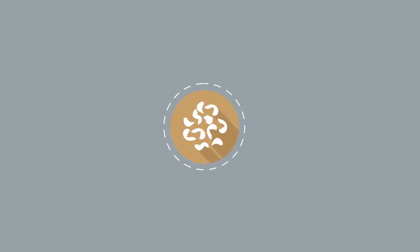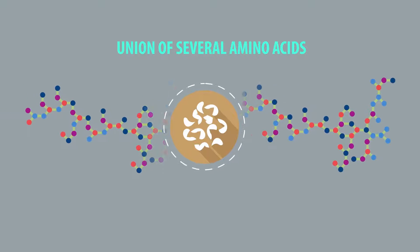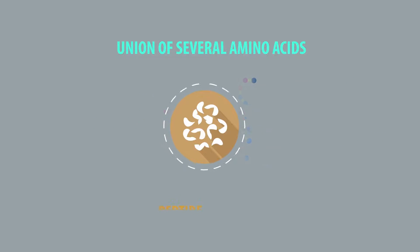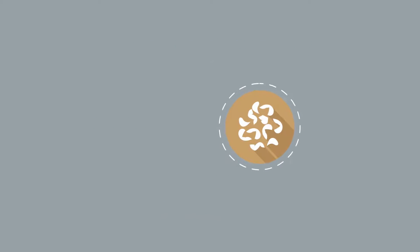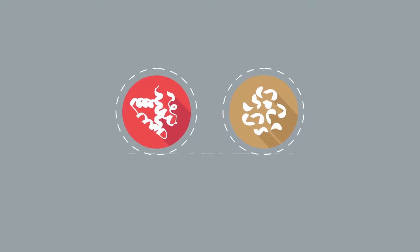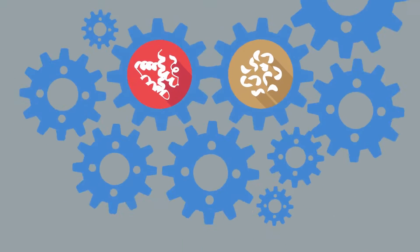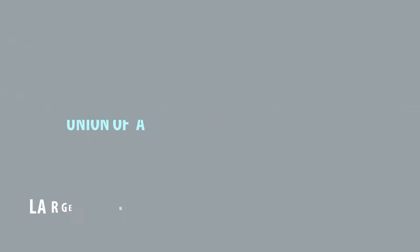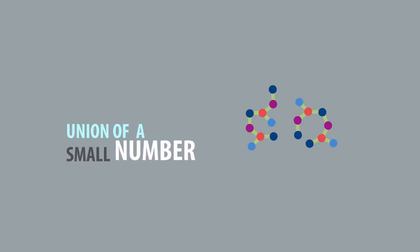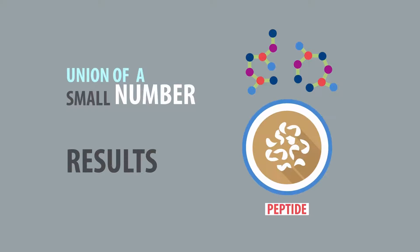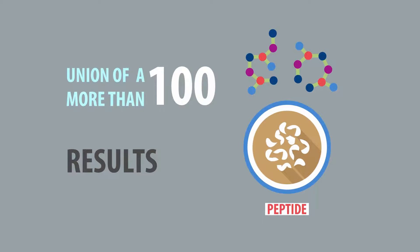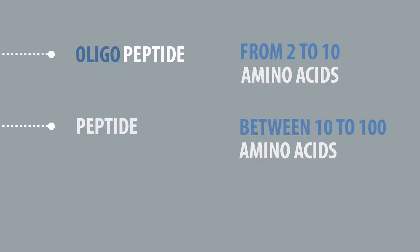Peptides are a class of molecules formed by the union of several amino acids through peptide bonds. Peptides, as well as proteins, are present in nature and are responsible for a large number of functions. The union of a small number of amino acids results in a peptide, and when there is a union of more than 100 amino acids, it results in a protein. Oligopeptide: 2 to 10 amino acids. Peptide: between 10 and 100 amino acids. Protein: more than 100 amino acids.